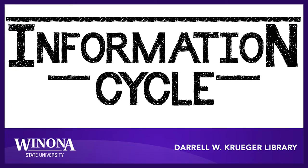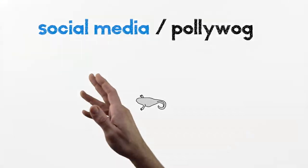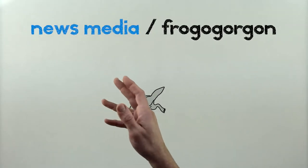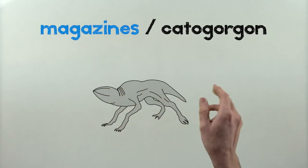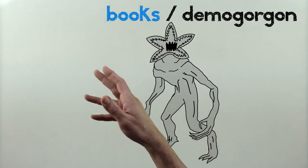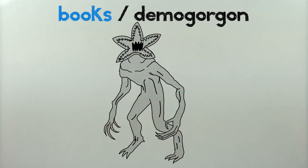Information is kind of like the demogorgon from Stranger Things. It grows and changes over time, and each stage of growth is marked by an increase in size, complexity, and to a degree, reliability.